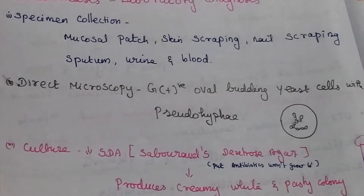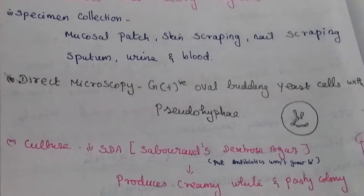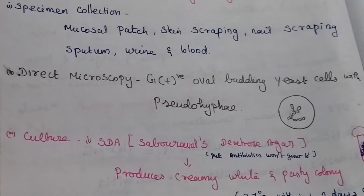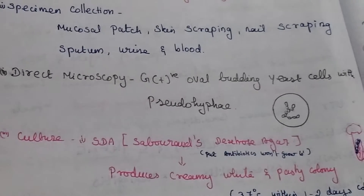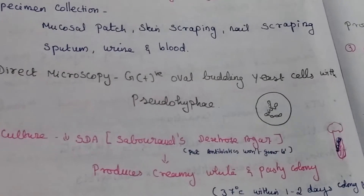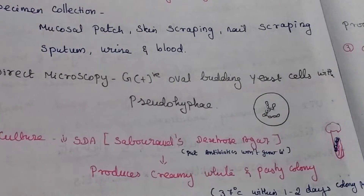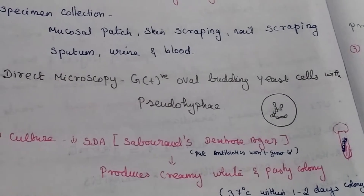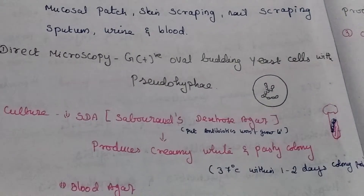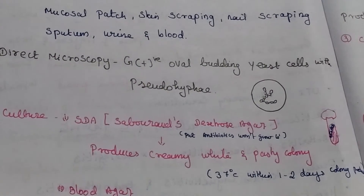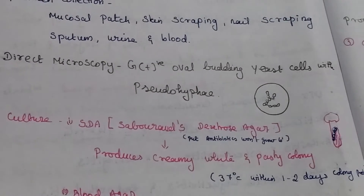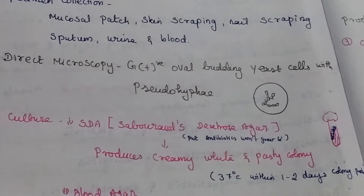After specimen collection, we perform direct microscopy. Gram-positive oval budding yeast cells with pseudo hyphae will appear under microscopy.